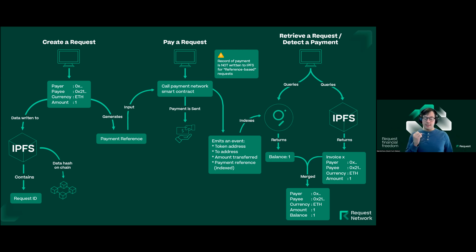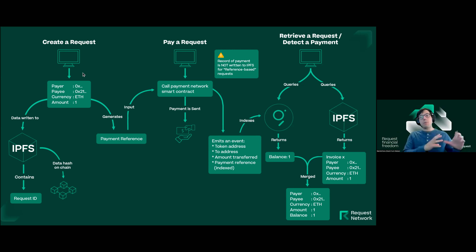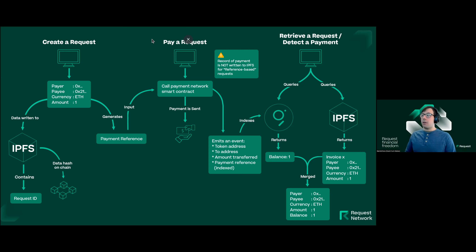We believe our system creates more ownership for the end user — it allows them to take ownership of their financial data and grants them the choice to use the platforms that work best for them. They can use one invoicing app in our ecosystem for a while, then decide a different invoicing app has a better interface or better support, and they could take all their data from the original platform and port it into the new one seamlessly, using Request Network as a shared data storage medium.